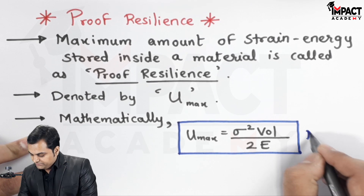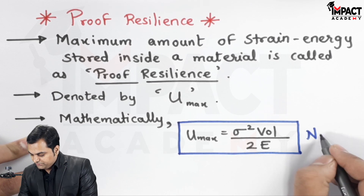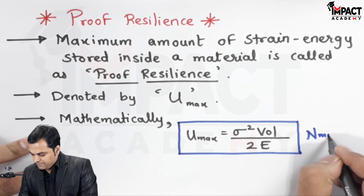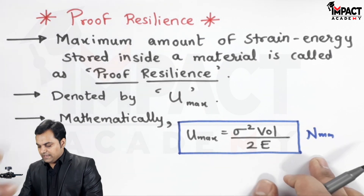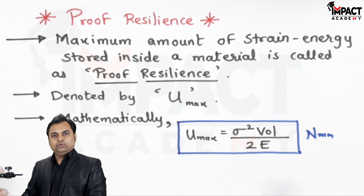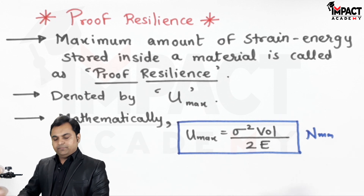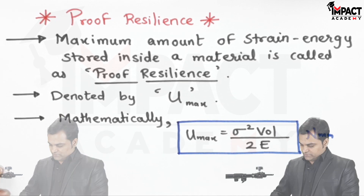The unit of proof resilience can be newton meter or newton millimeter — the same as the unit of work — and it can even be expressed in kilonewton meter.